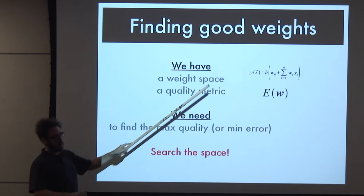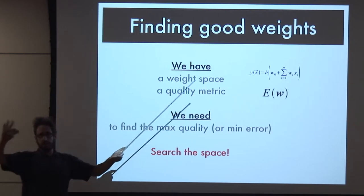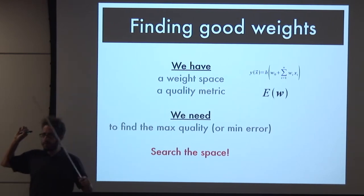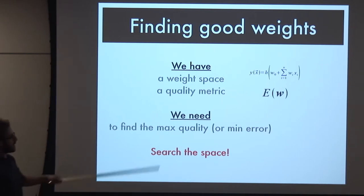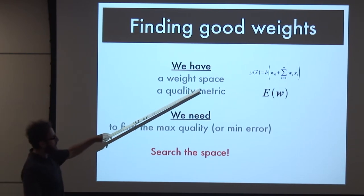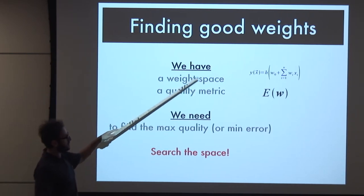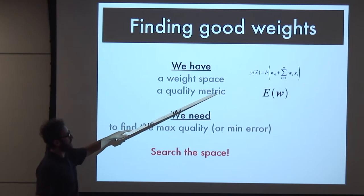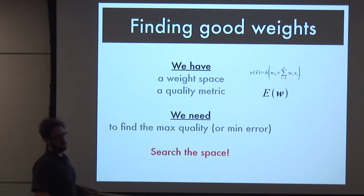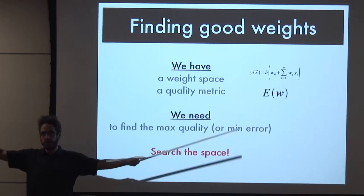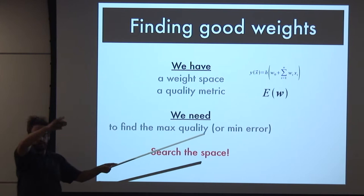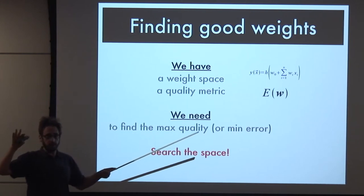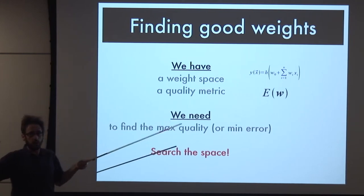We've defined a space where we hope our function lives - the space defined by possible weights. Every set of weights you choose gives you a different function. For any point in that space, we have a function and can evaluate its quality - we have a number which tells us how good each one is.